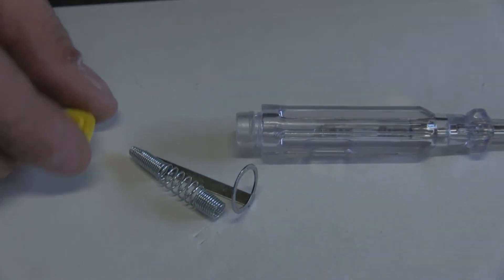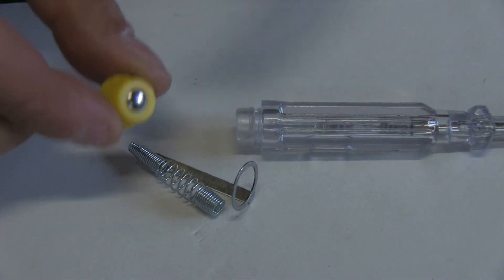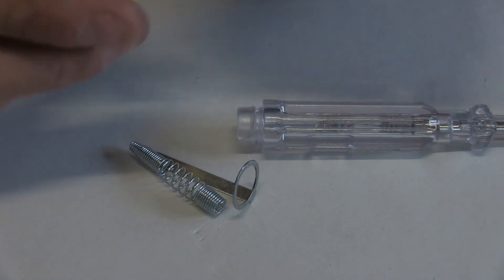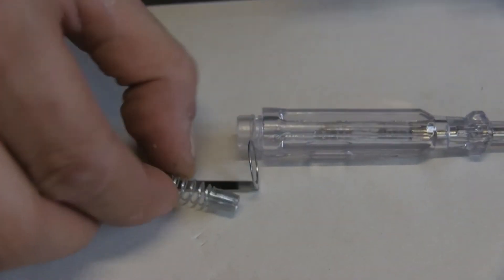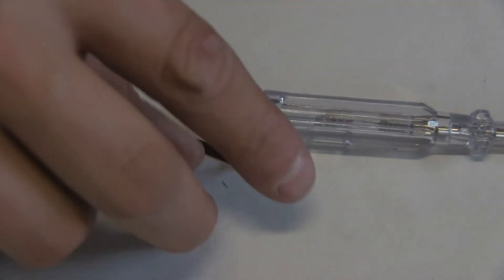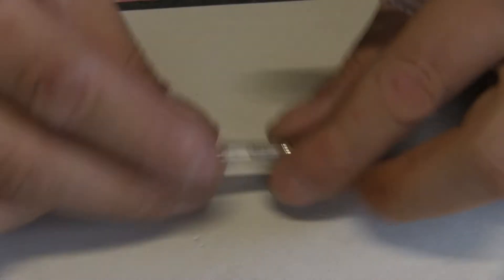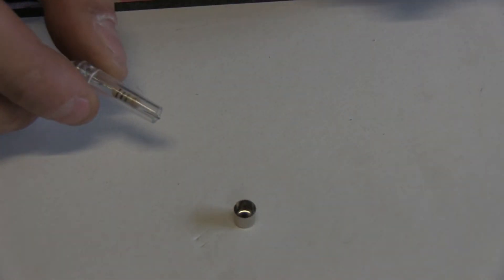So there we are, we have this cap. I'm going to pop this out using maybe a nail and hammer, and we're going to have a look at what is inside. So you have this spring that makes conduction, this clip, and there we are. I'm going to keep this metal cup because I'm going to need it.